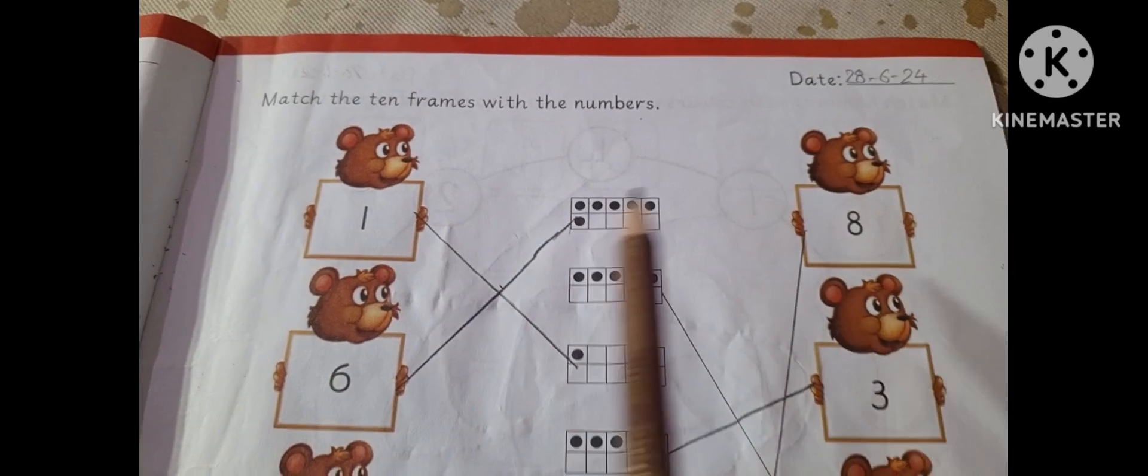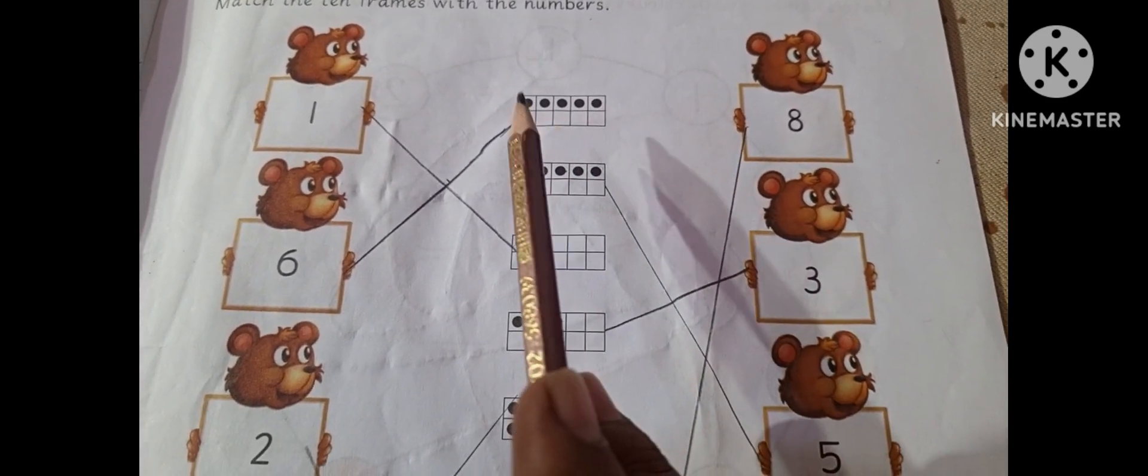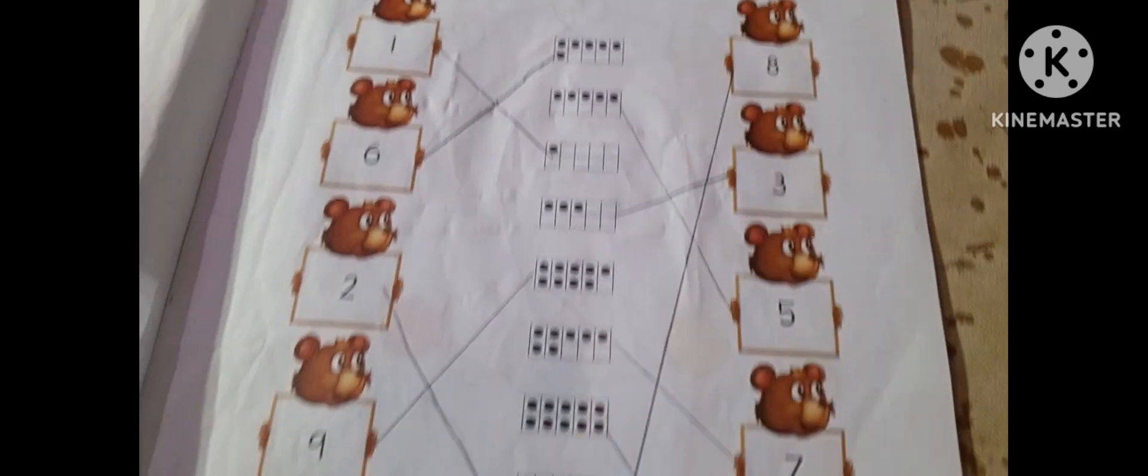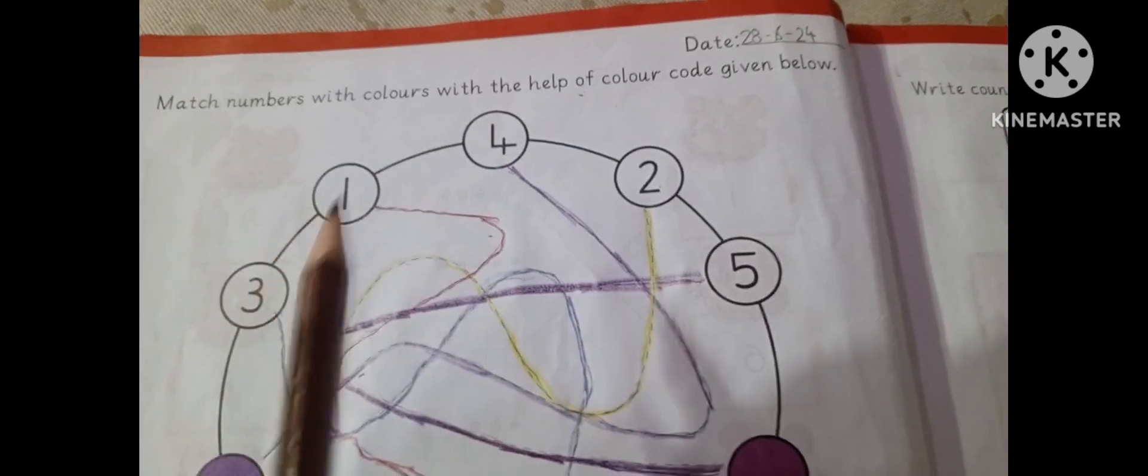Next is match the print with the numbers. You can see here are the dots. 1, 2, 3, 4, 5, 6. We match 1, 2, 3, 4, 5, 6.